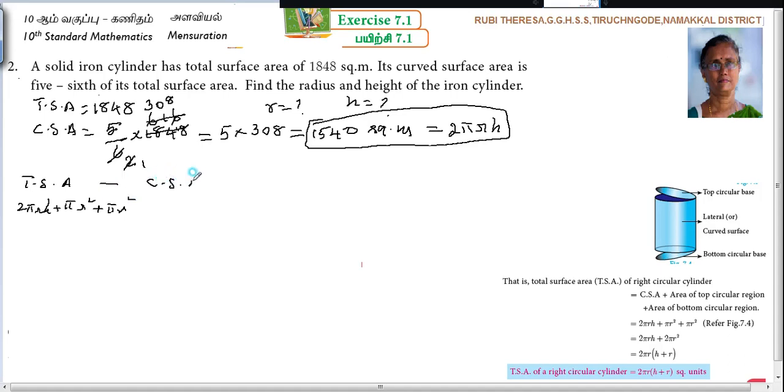Next, TSA minus CSA. What is CSA? 2πrh. If you want to do the calculation, you can, but here's a better way. What is TSA actually? 1848. What is CSA you found out? 1540. TSA is 1848, CSA is 1540. You have to subtract it. The 2πrh terms cancel, leaving πr² + πr² = 2πr². Subtracting: 8 minus 0 is 8, 4 minus 4 is 0, 8 minus 5 is 3, 1 minus 1 is 0. So 308 square meters, because this is also area.